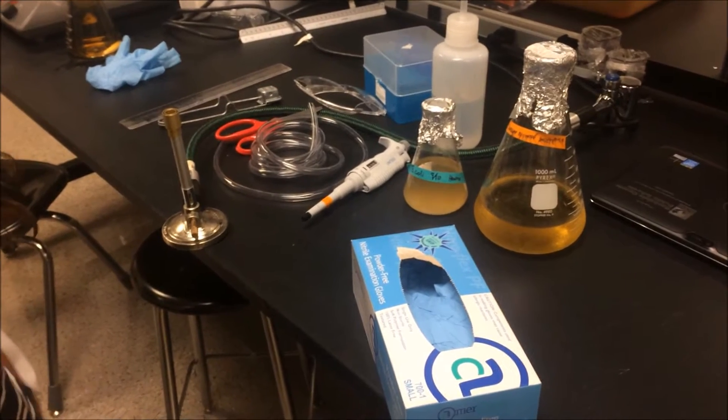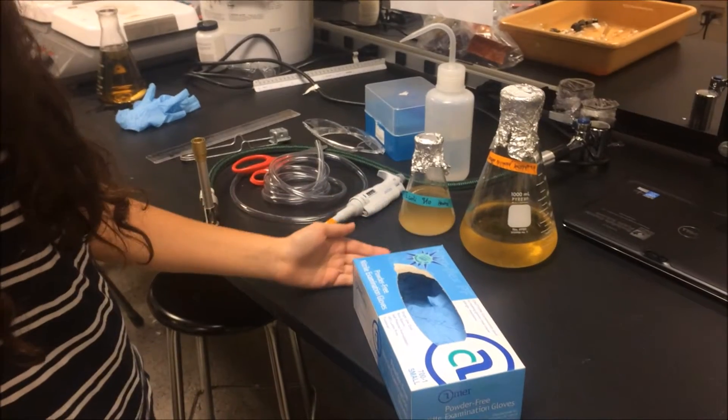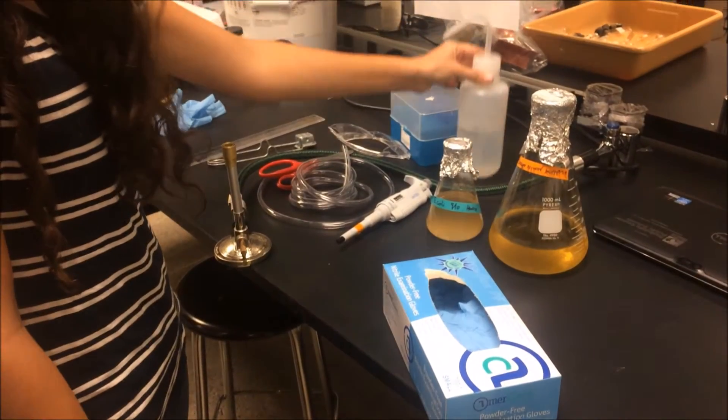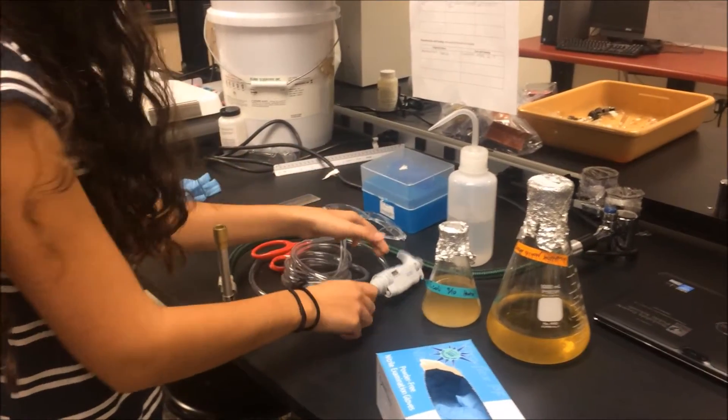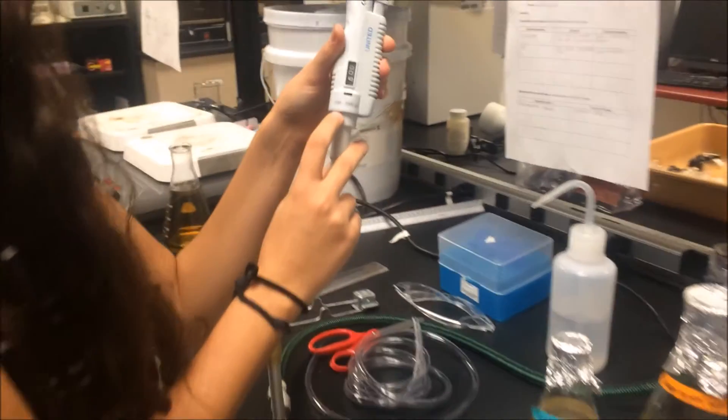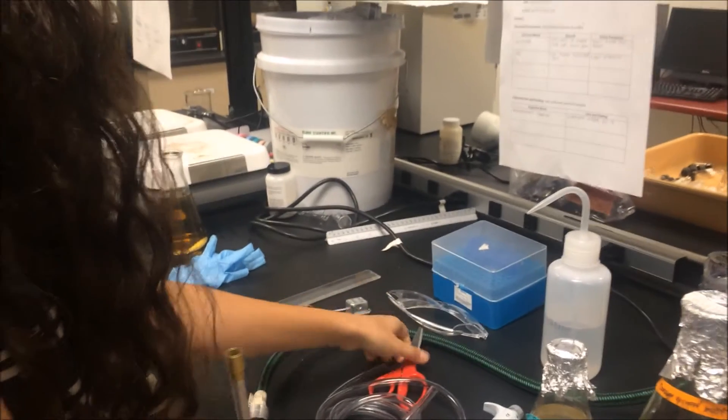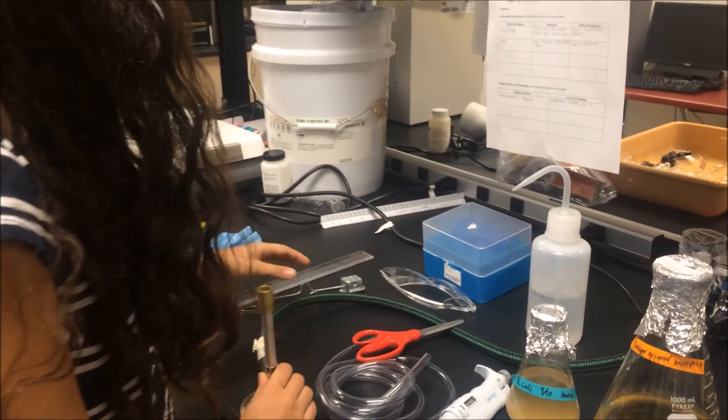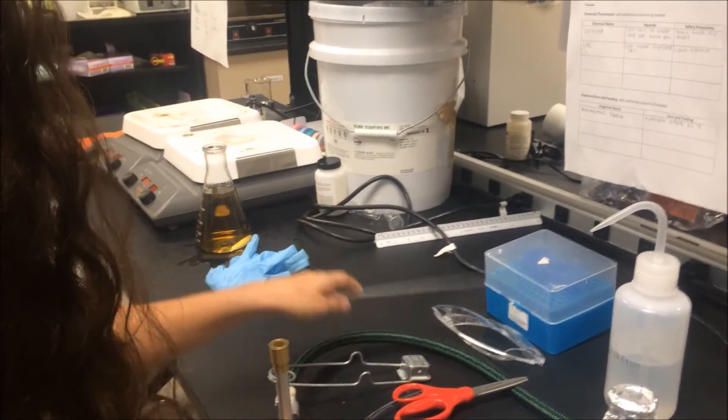First, gather all materials. Gather gloves, nutrient broth, E. coli, 70% ethanol, micropipet tips, micropipetter from 100 to 1,000 microliters, vinyl tubing, scissors, Bunsen burner, striker, ruler, and lab coat.